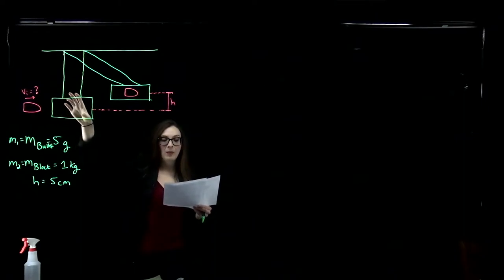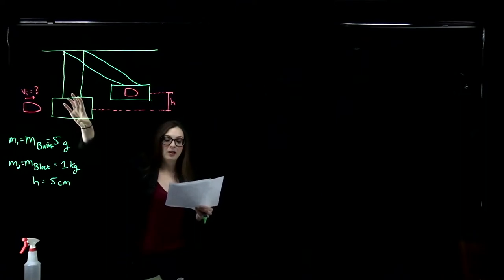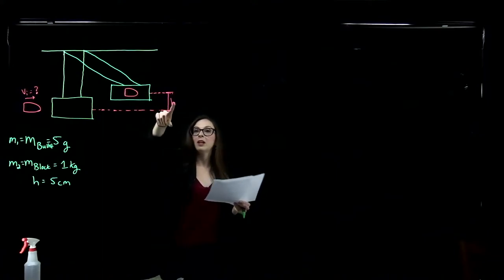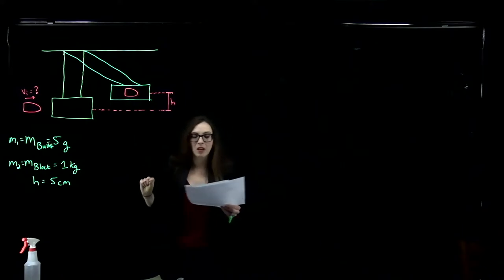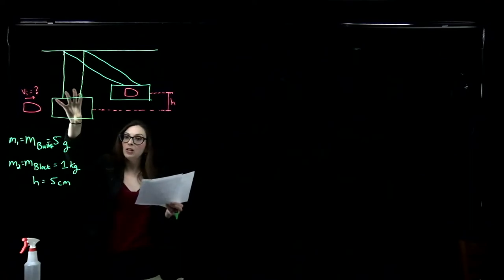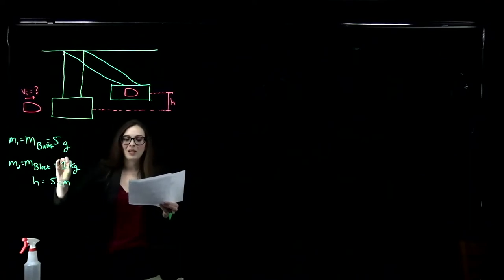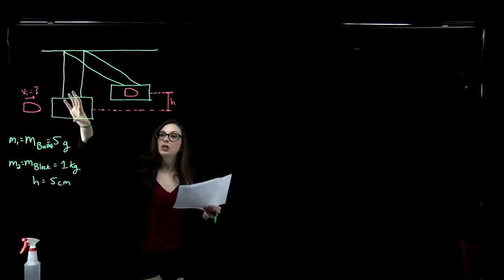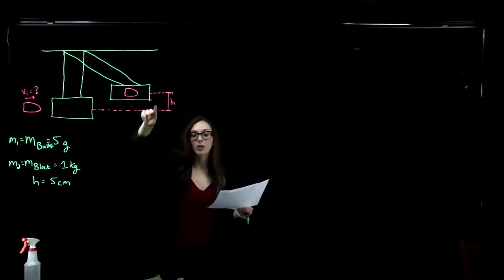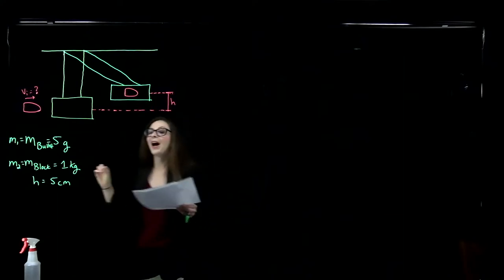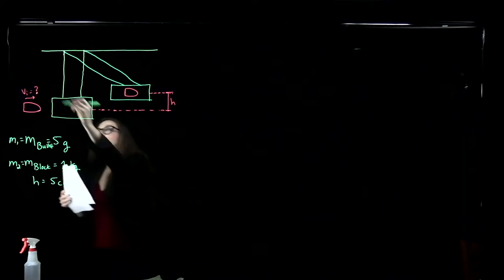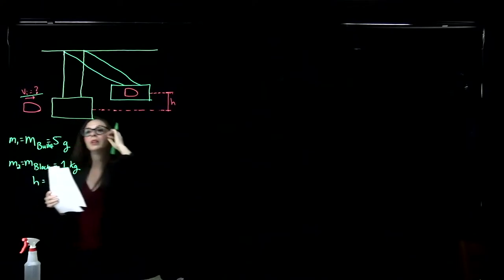The entire system — the bullet plus the block — is going to swing up to some final height H after the collision. The mass of the bullet is 5 grams, the mass of the pendulum block of wood is 1 kilogram, and after the collision, that block swings up a height of 5 centimeters from its original height. Our problem here is to find the initial velocity of our bullet.